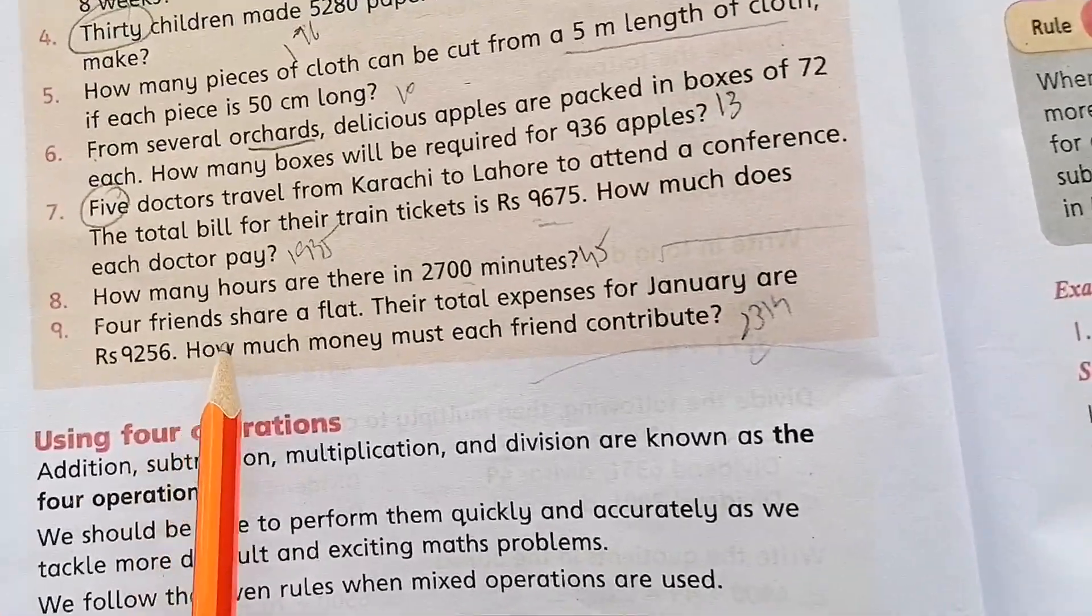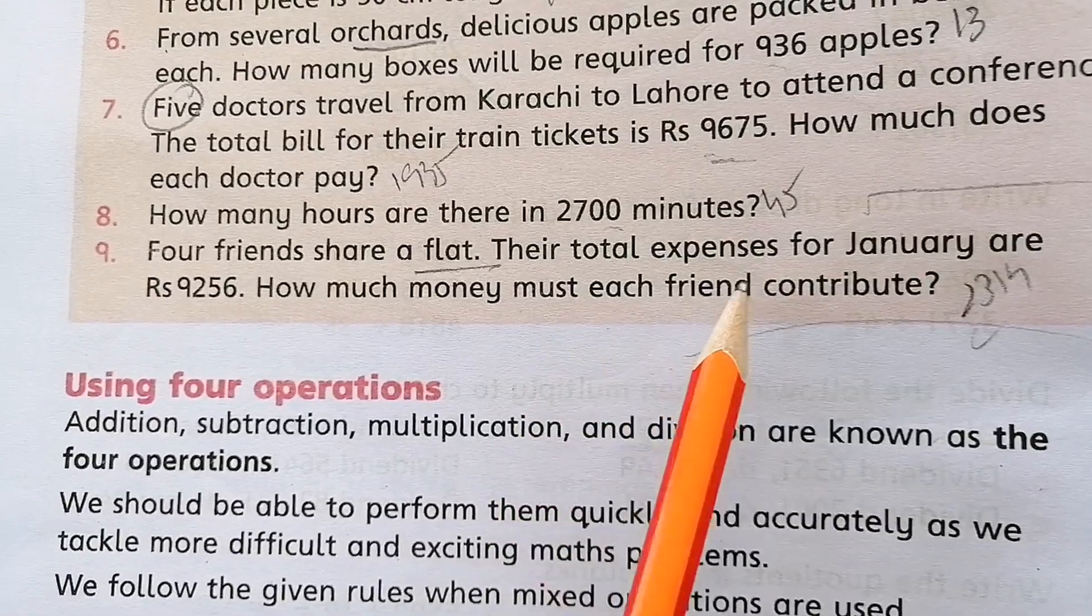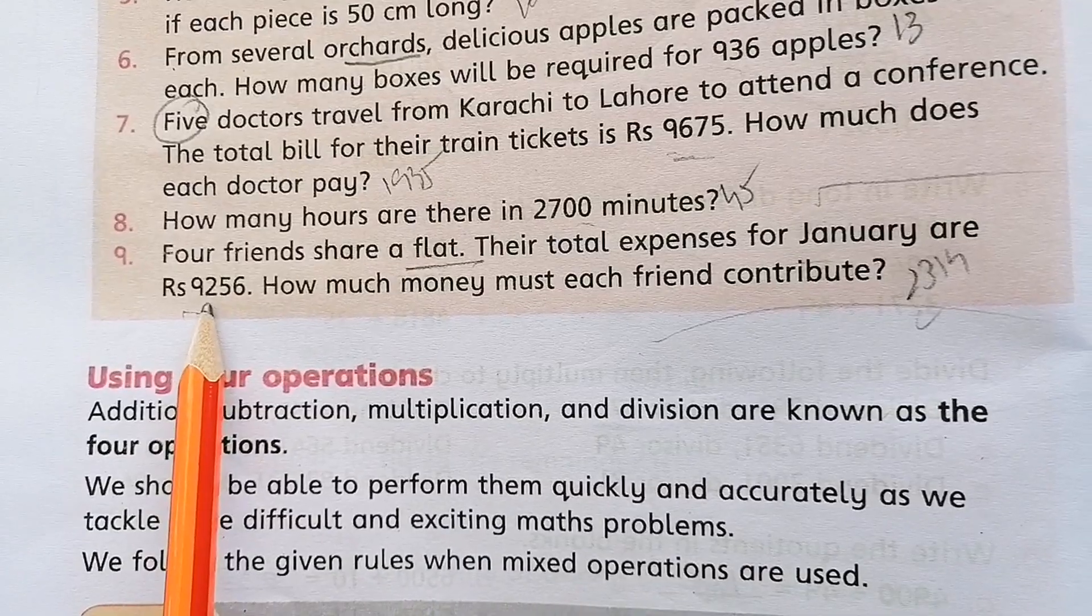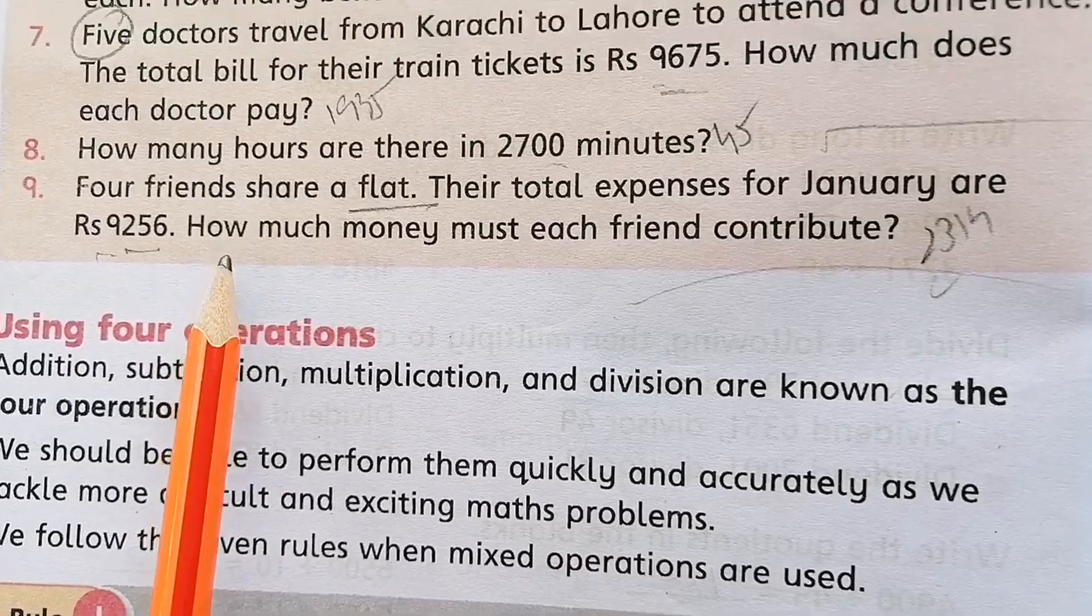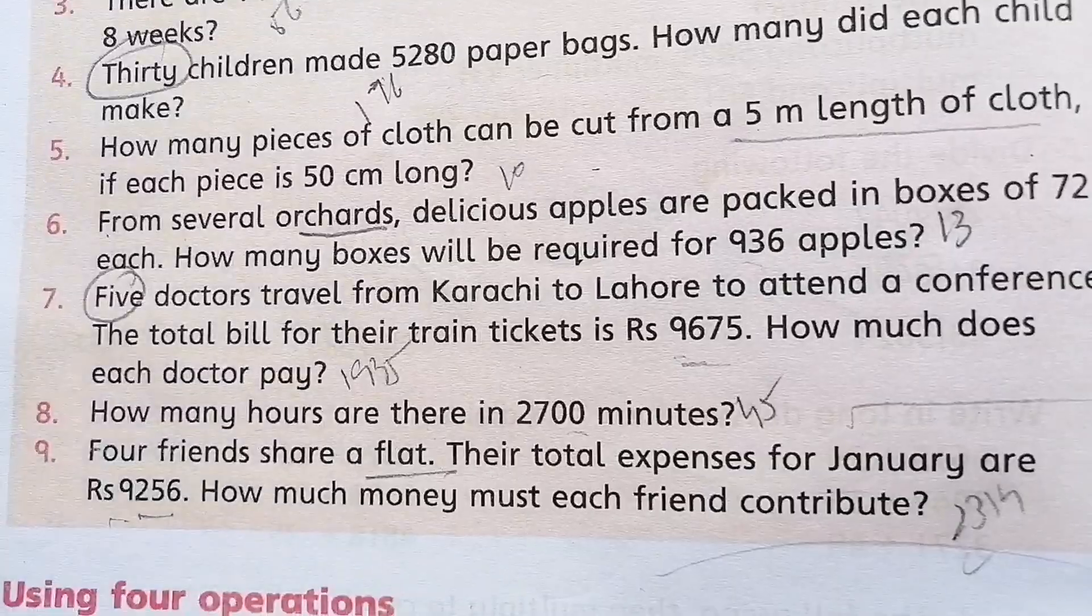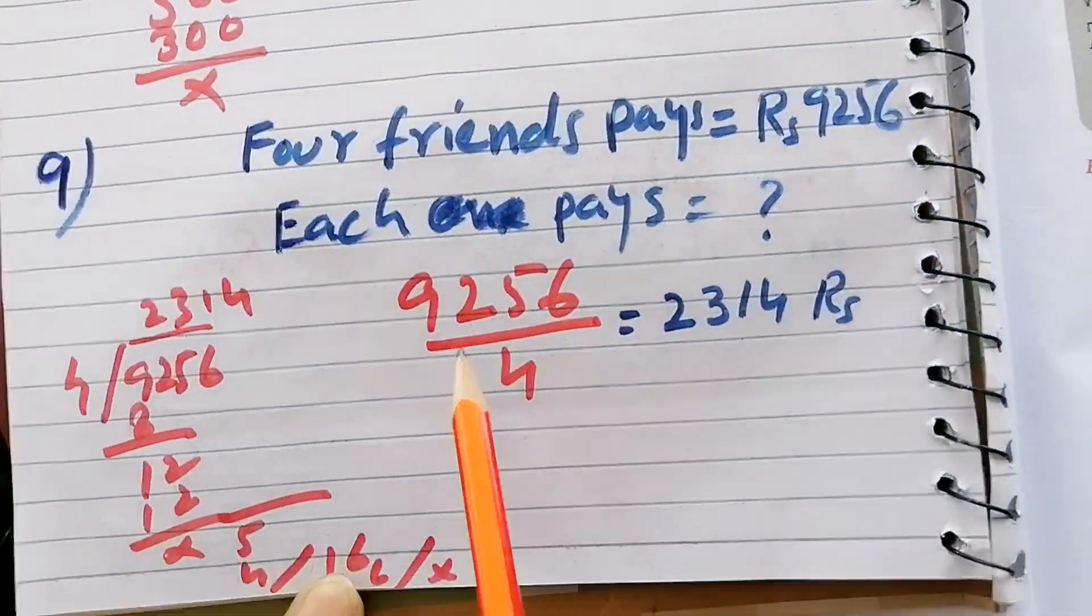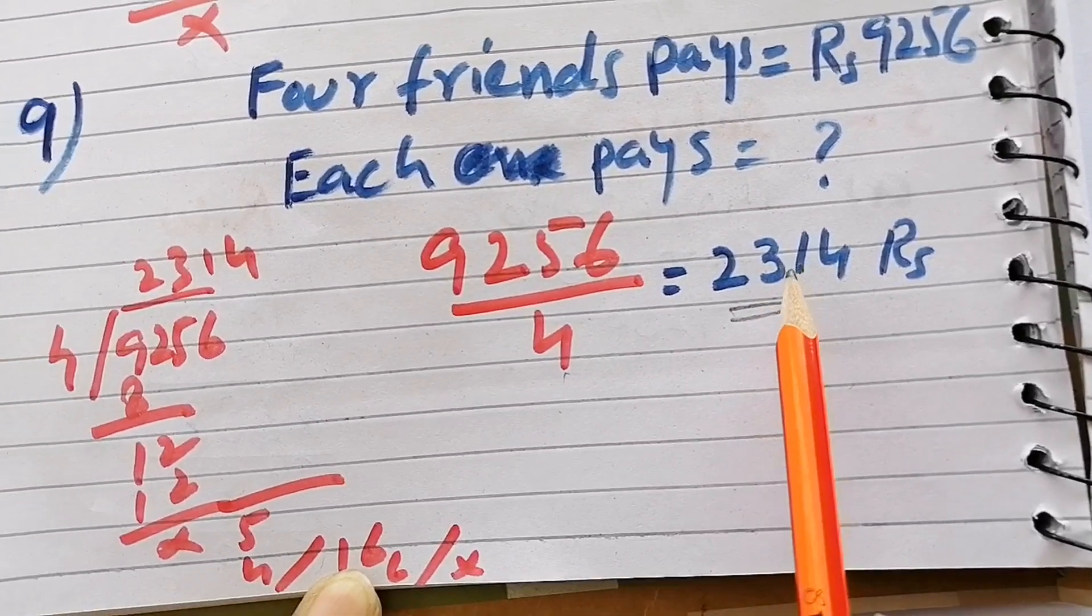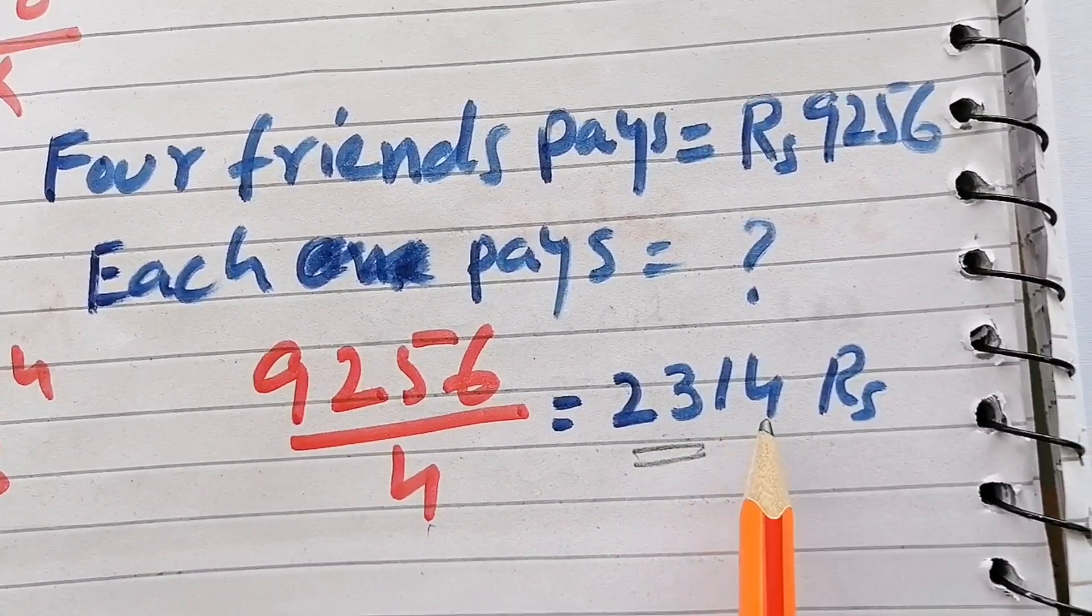Last one: Four friends share a flat. Their total expenses for January are 9,256 rupees. How much does each friend contribute? Divide 9,256 by 4 to get 2,314 rupees per person.